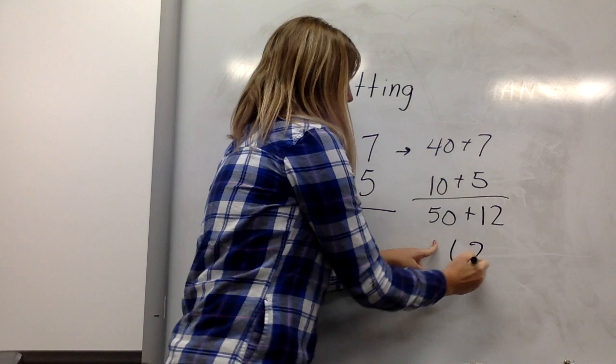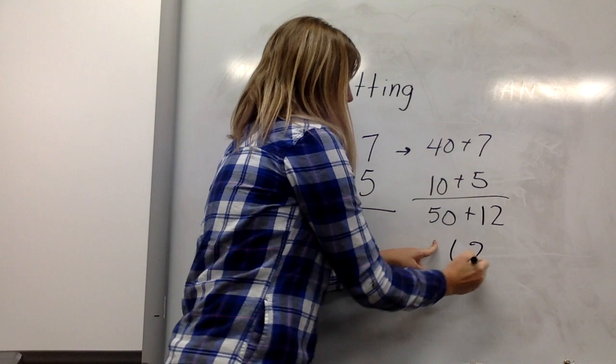This is the precursor to learning that 7 and 5 is 12, which is 2 ones and 1 ten.